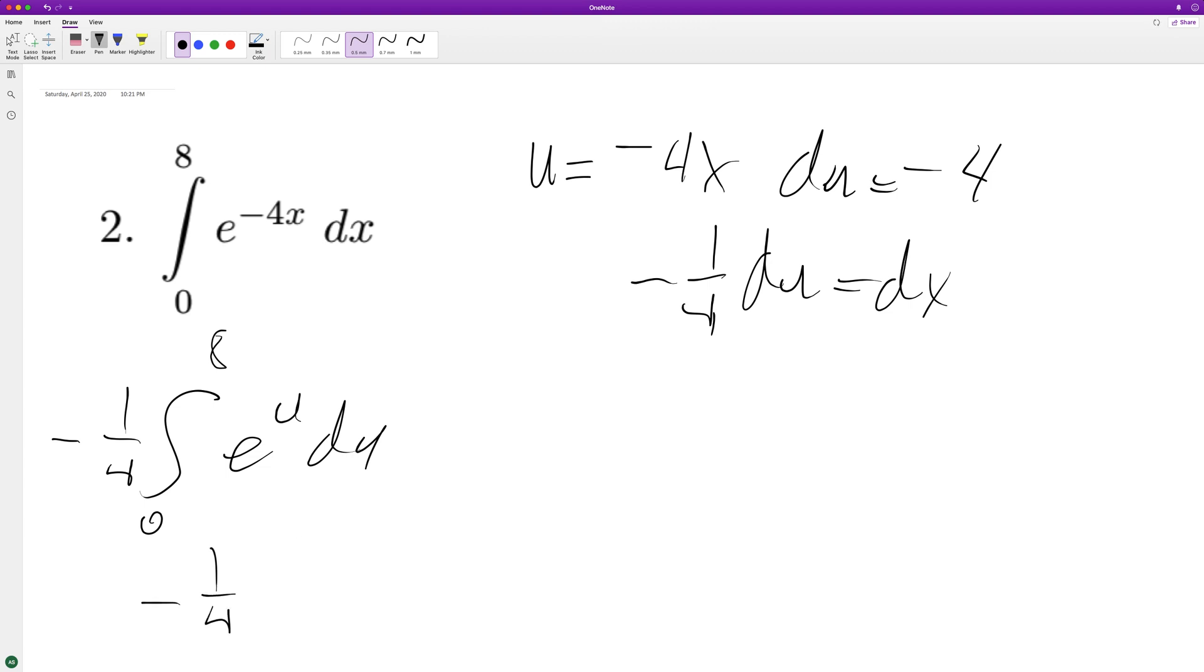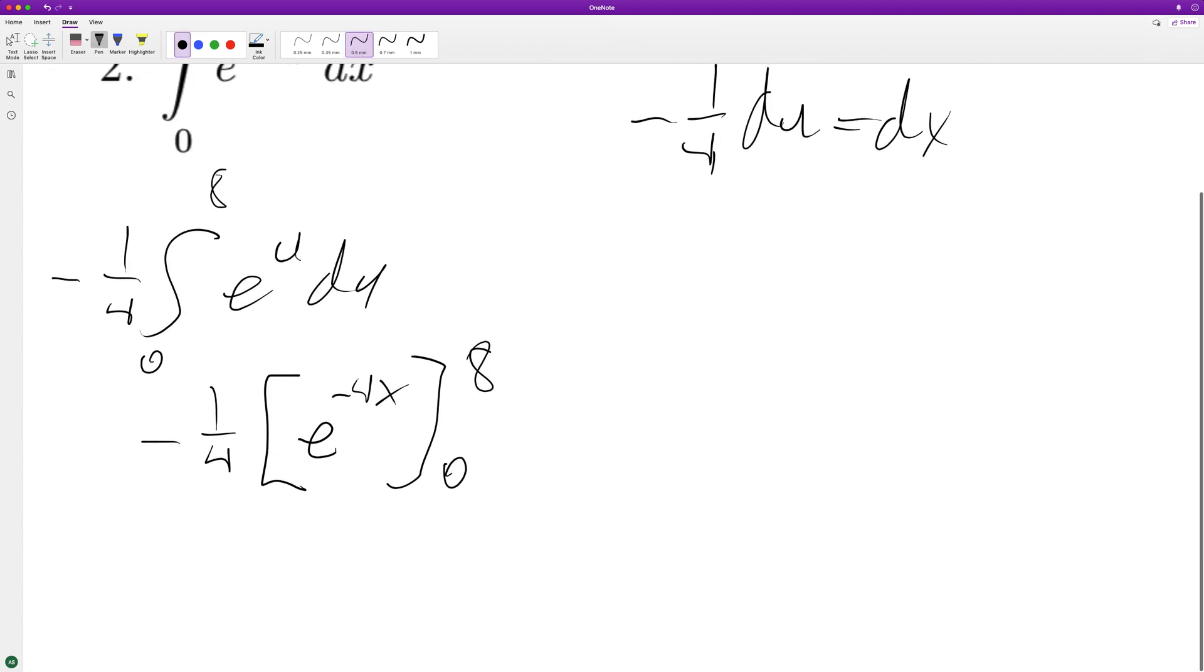All right, so substitute back in. All right, so negative 1 fourth, negative 4 times 8, negative 32, minus e raised to the, essentially, 0.